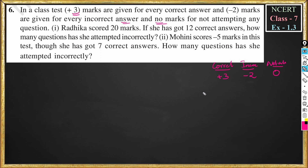For example, a person has attempted 5 questions in which 3 are correct and 2 are incorrect. So they get 3 × 3 = 9, plus 2 × (−2) = −4, so 9 − 4 = 5. Their total score would be 5. This is the concept of the exam.